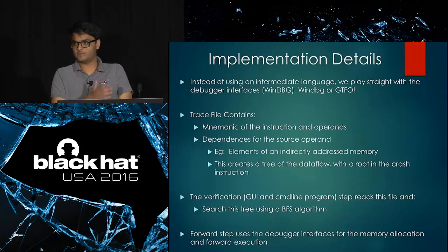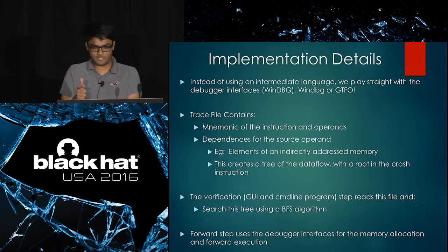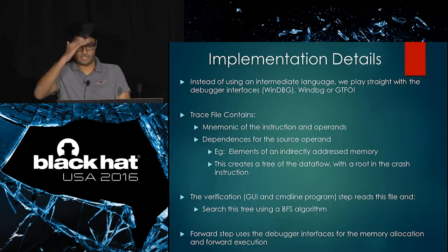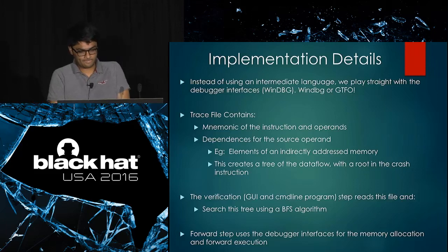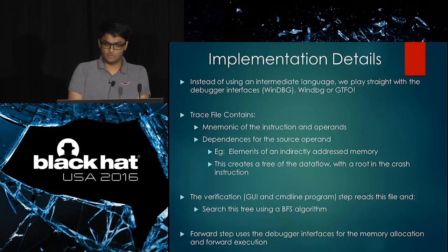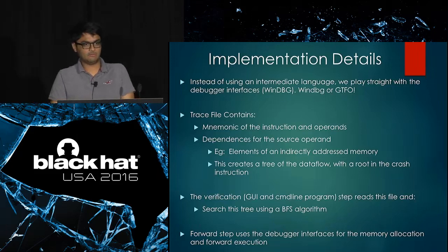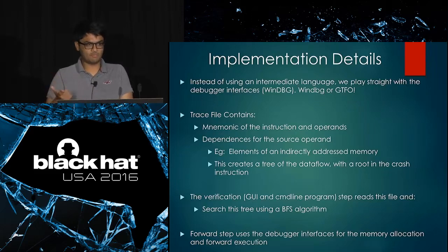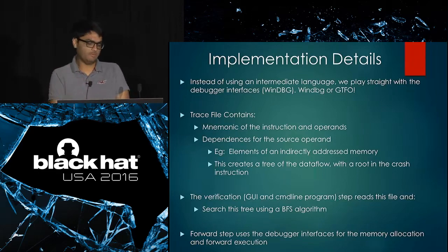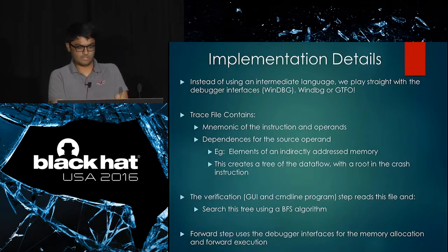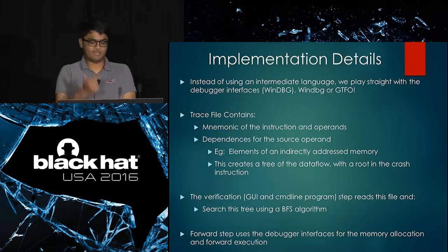The trace file generated during backward tracing contains the mnemonic of the instruction, the operands, and all source operand dependencies. We essentially create a tree of the entire data flow from the initial program crash forward. There is both a GUI and a command line analyzer. The command line analyzer lives within the debugger for quick integration and scripting.